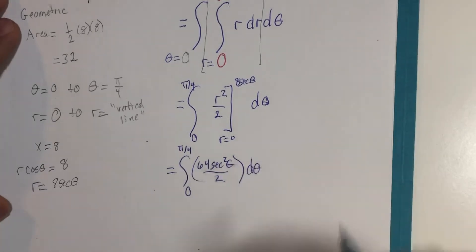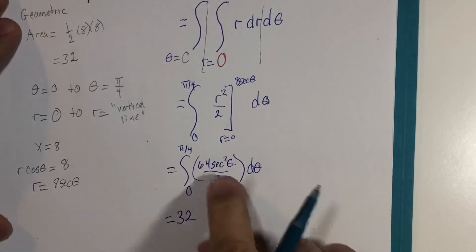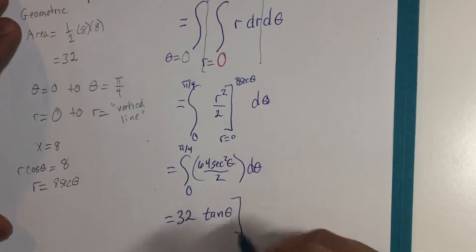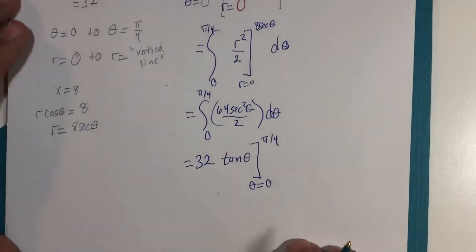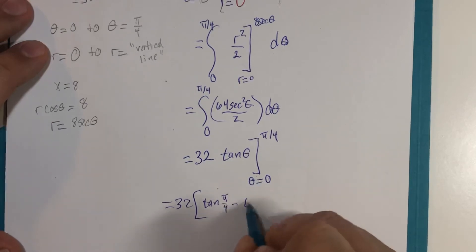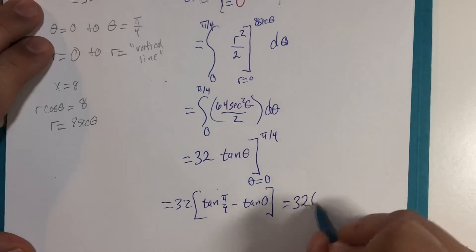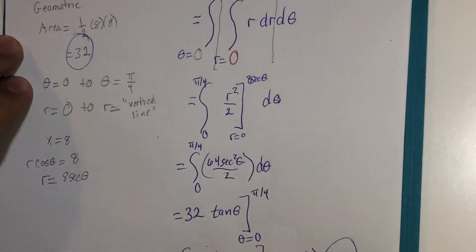with respect to theta. Half of 64 is 32. The antiderivative, or the integral, of secant squared is tangent of theta. And theta is going to go from 0 to pi divided by 4. 32 tangent of pi over 4 minus tangent of 0. The tangent of pi over 4, well, that's right, it's 1. And the tangent of 0 is 0. 32 multiplied by 1 is 32, which was the same area we had when we used geometry to calculate the area.